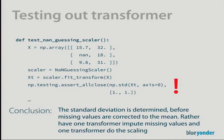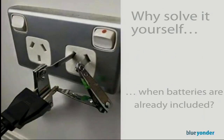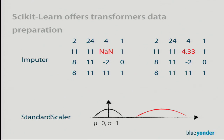So we could rewrite our NaNGuessingScaler class into two separate classes — one doing the scaling and one doing the NaN replacement. Or, since scikit-learn has batteries included, we can use existing transformers from its library. One is called the `Imputer`, which imputes missing values by replacing NaN with the mean. The other is `StandardScaler`, which scales data from its original distribution to one centered around zero with unit variance.